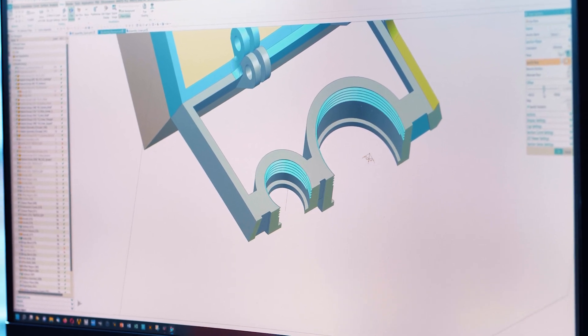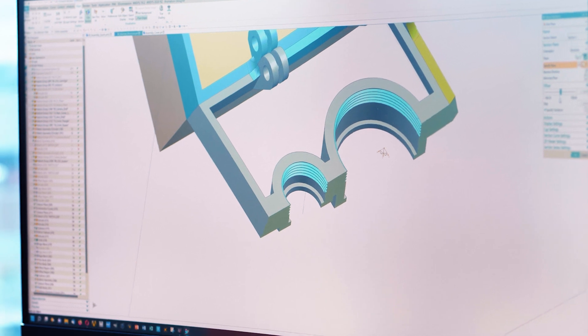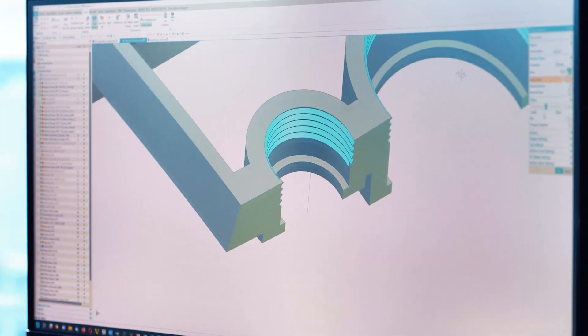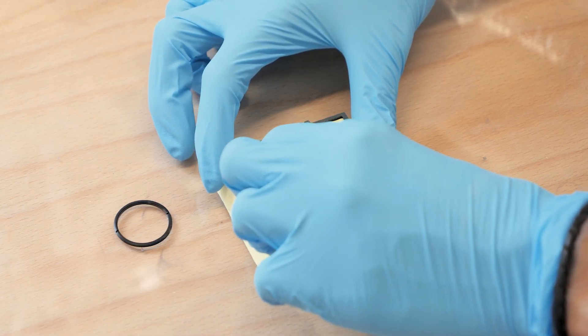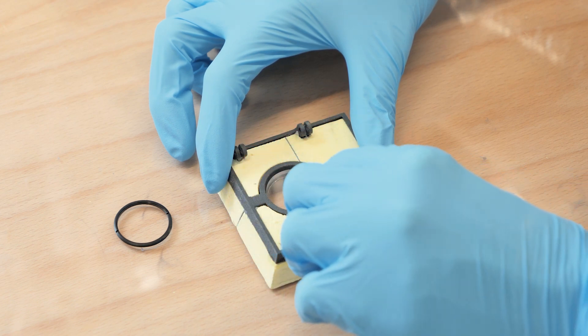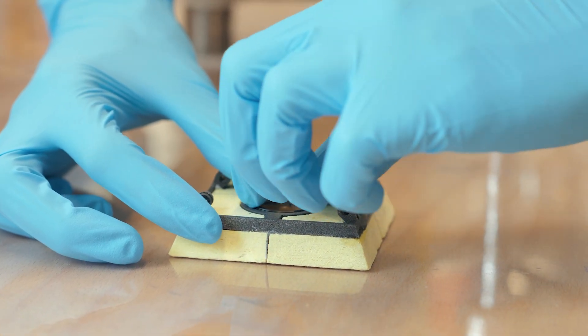One of the greatest advantages of additive manufacturing is the integration of functions, which we were able to incorporate in our lens holder for the cameras where we have the thread directly manufactured in the part.